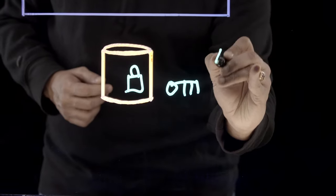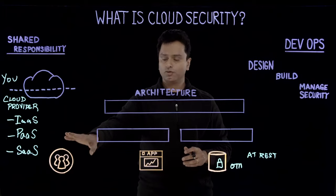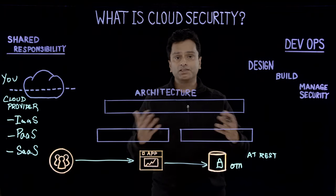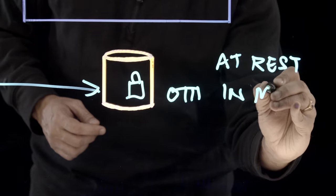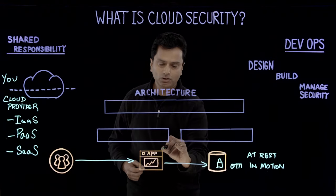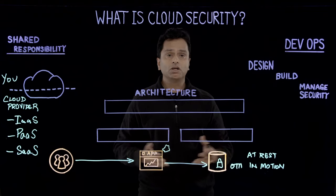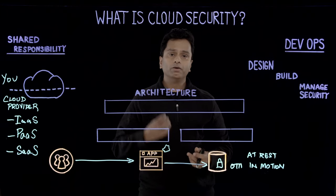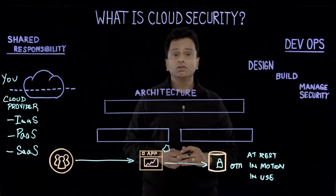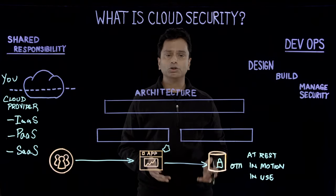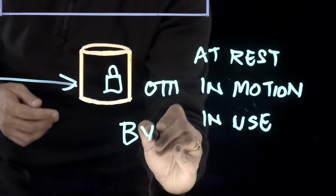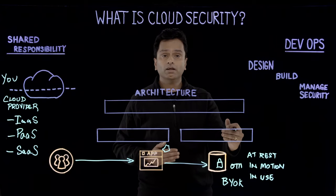Take a holistic approach to data protection: encryption for data at rest, data in motion as it comes from services to data stores or applications, and in API requests coming through. In the new world, we also need to think about data in use — when the application is actually processing the data, there is going to be data in memory. You can actually start to protect data using hardware-based technologies to protect in-memory data as well. So take a holistic approach to data protection at rest, in motion, and in use, with full control of your keys — bring your own keys, or even better, keep your own keys.